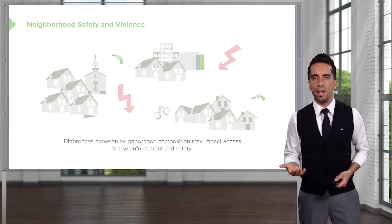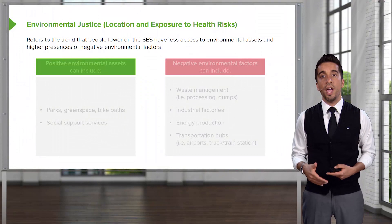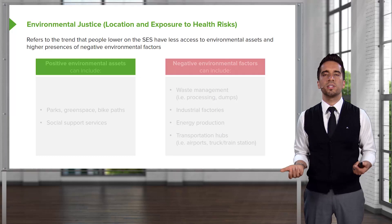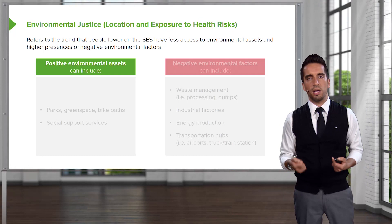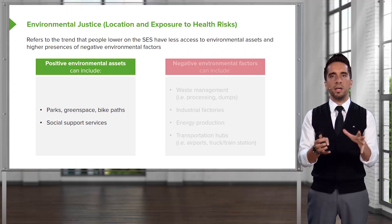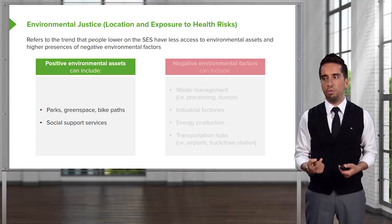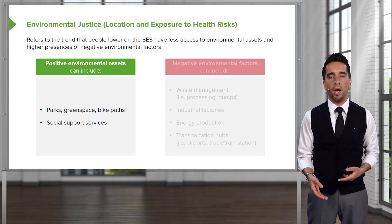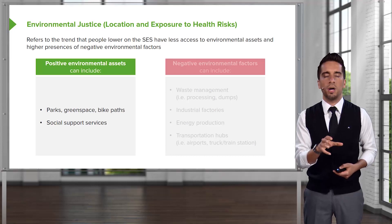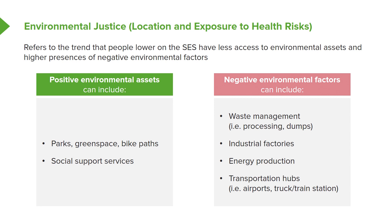Now we're going to approach a topic called environmental justice. This refers to the trend that people lower on the SES scale have less access to environmental assets and a higher presence of negative environmental factors. Environmental assets include things like parks, green spaces, bike paths, places to take your dog and play with your kids, and social support services. A lot of tax money is put into creating these play spaces. Negative environmental factors include things like garbage processing plants and dumps, factories, energy production, transportation hubs — airports, trucks, train stations — which tend to fall around areas with lower economic status.